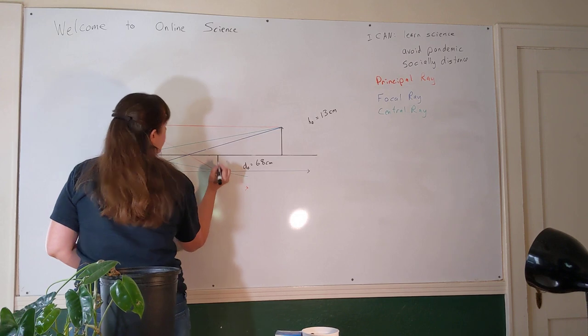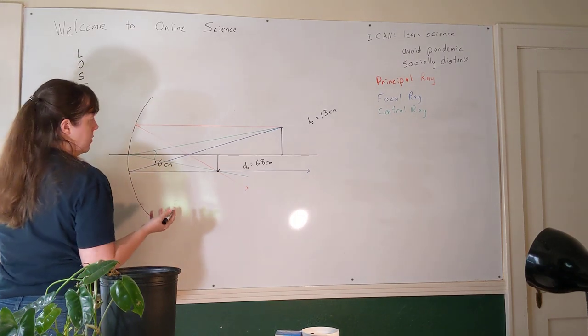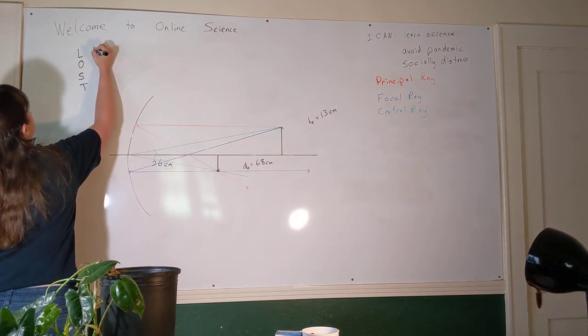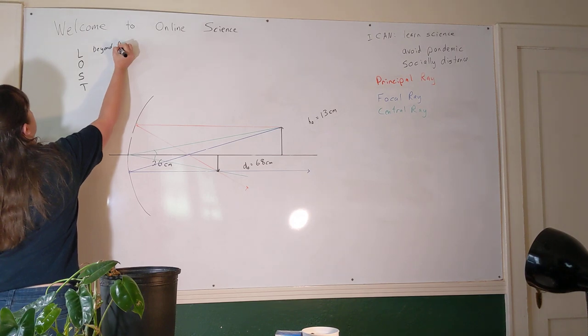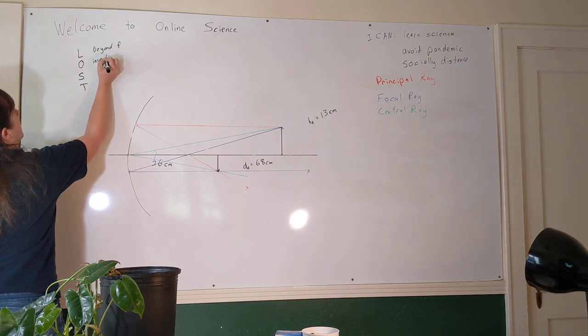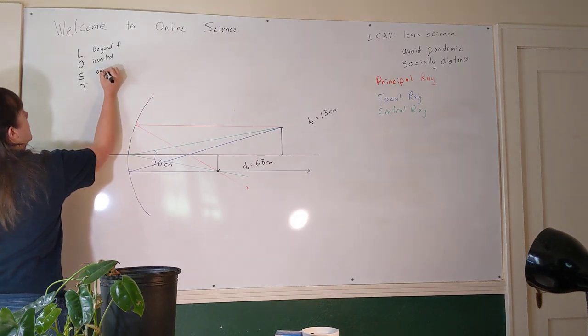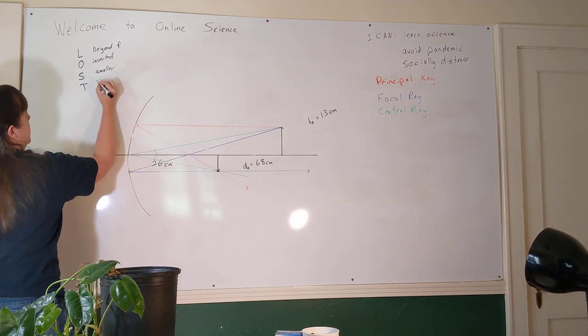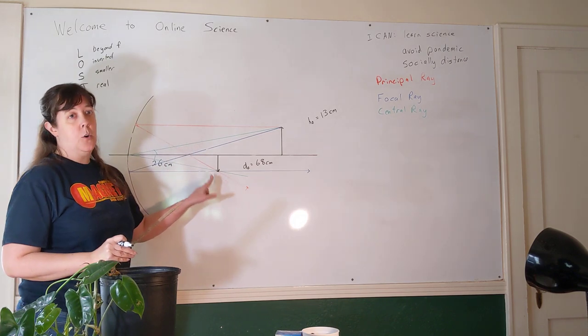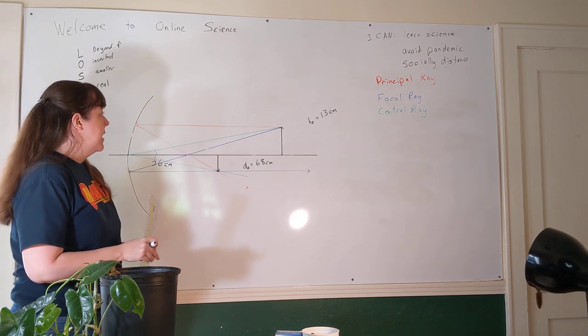So we hopefully have gotten pretty good at the lost art of image description. L was the location. We would describe this location as being beyond the focal point. We would describe the orientation of this object as being inverted. We would describe the size of this object as being smaller. And we would describe the type of this object as being real. The way you can tell that it's a real image is that actual light rays created this image.